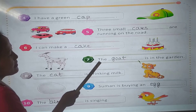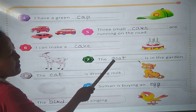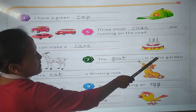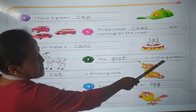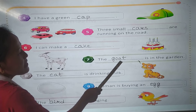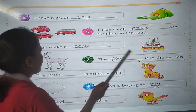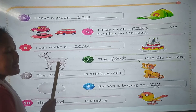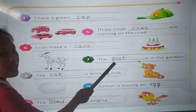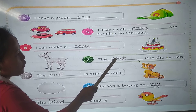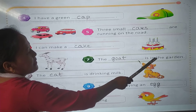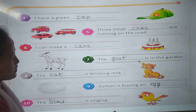In number 7: The dash is in the garden. Look at the picture, what is this? Yes. Goat. So we need to write here: goat. G-O-A-T. The goat is in the garden.